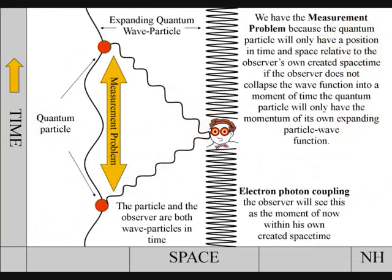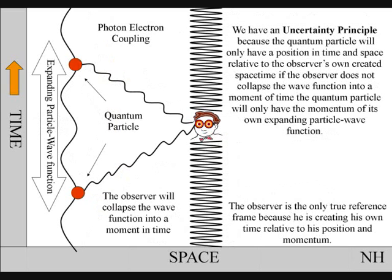We have a measurement problem, or uncertainty principle, because the quantum particle will only have a position in time and space if the wave-particle function collapses.